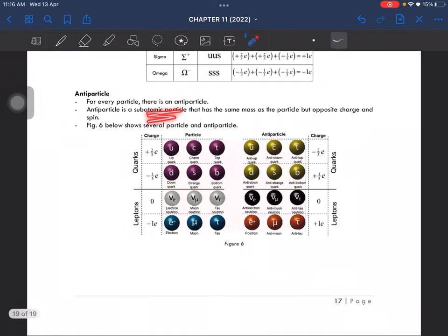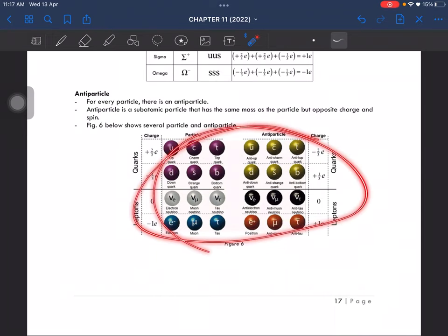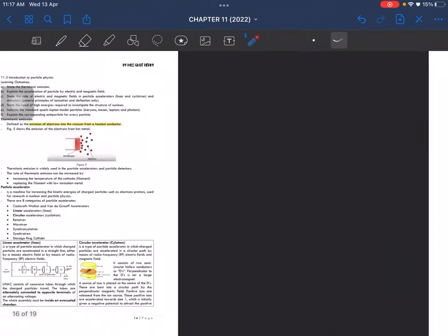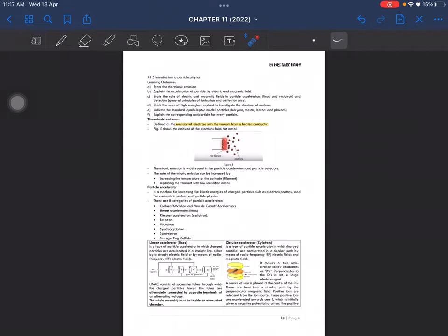An antiparticle is a subatomic particle that has the same mass as the particle but opposite charge and spin. This figure here shows several particles and antiparticles. That is the end of our Chapter 11.